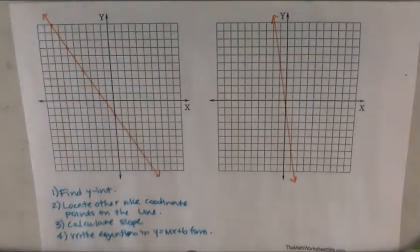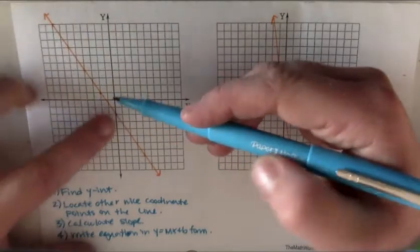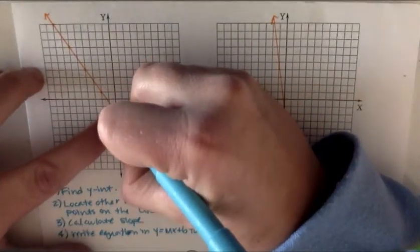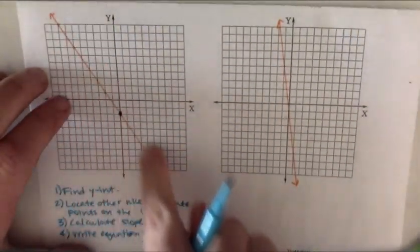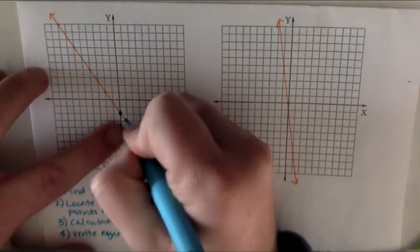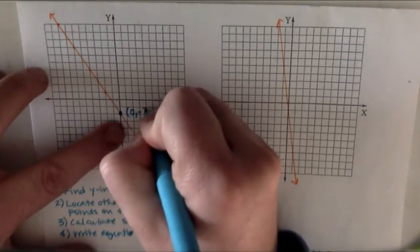That's a little blurry, sorry. Alright, so let's start out with this first line. We are going to find the y-intercept, so that's where this line, this orange line, crosses the y-axis, which happens to be at 0, negative 2.